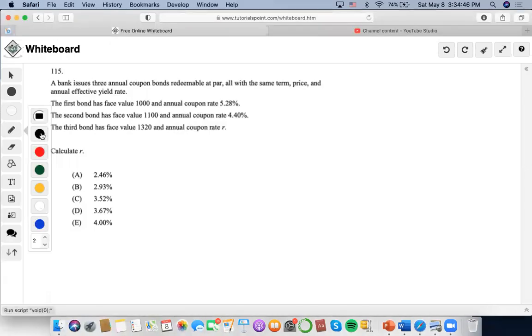Hi. For this one, this says that a bank issues three annual coupon bonds redeemable at par, all with the same term, price, and annual effective yield rate. They give us three different scenarios dealing with different coupon rates. So we're going to try to find what this is.